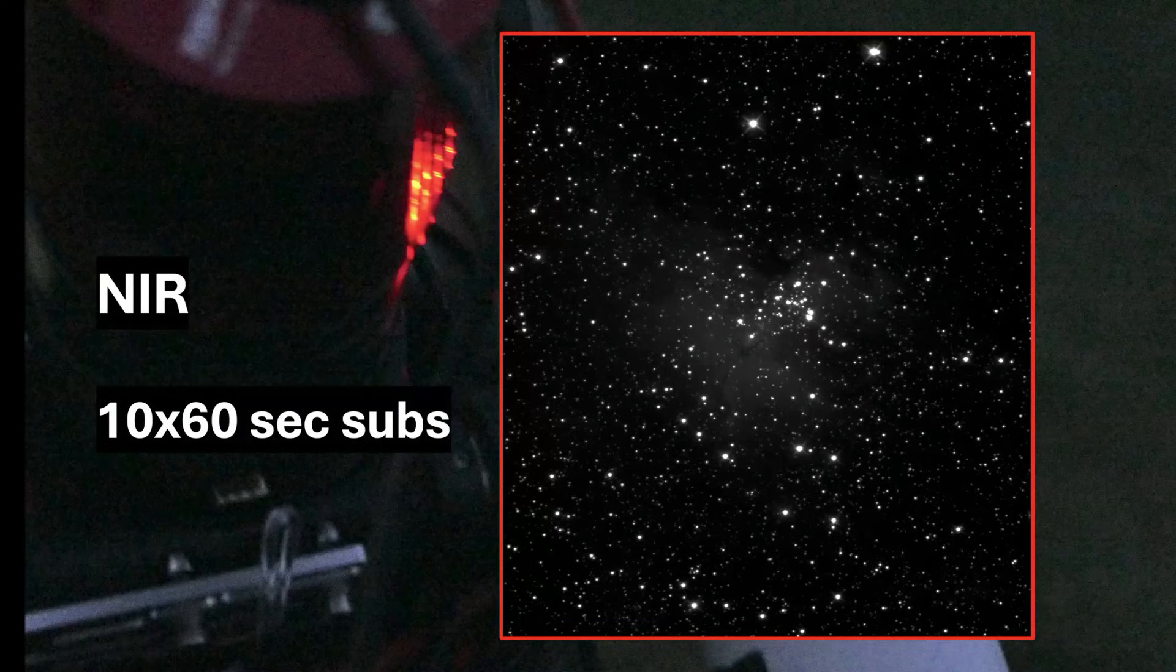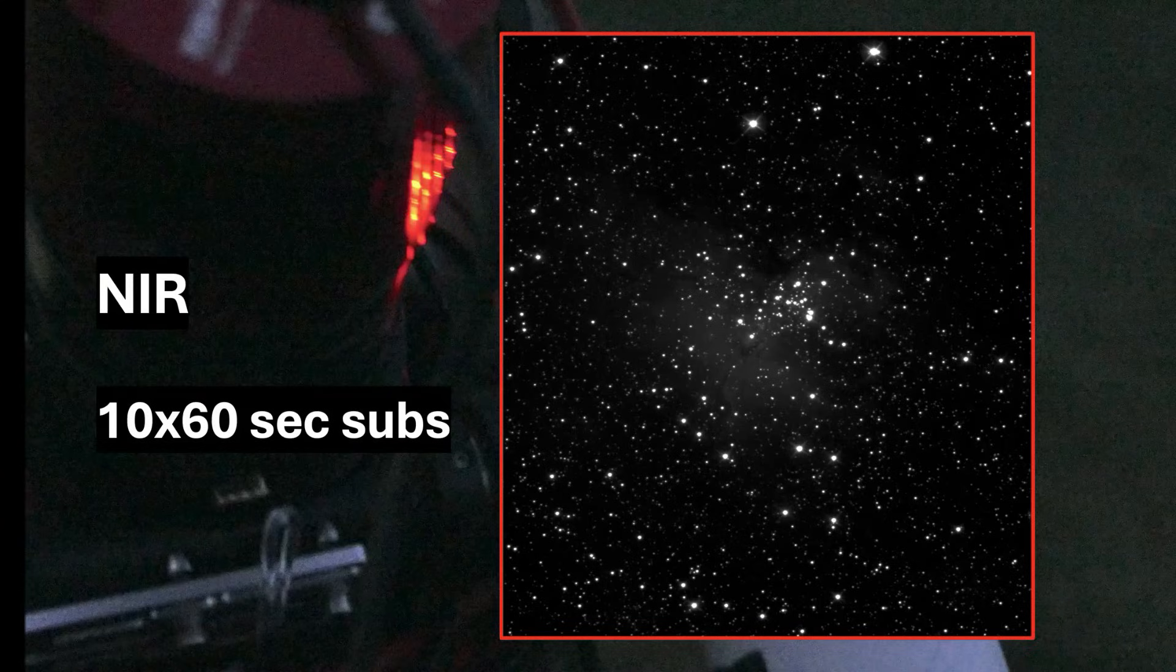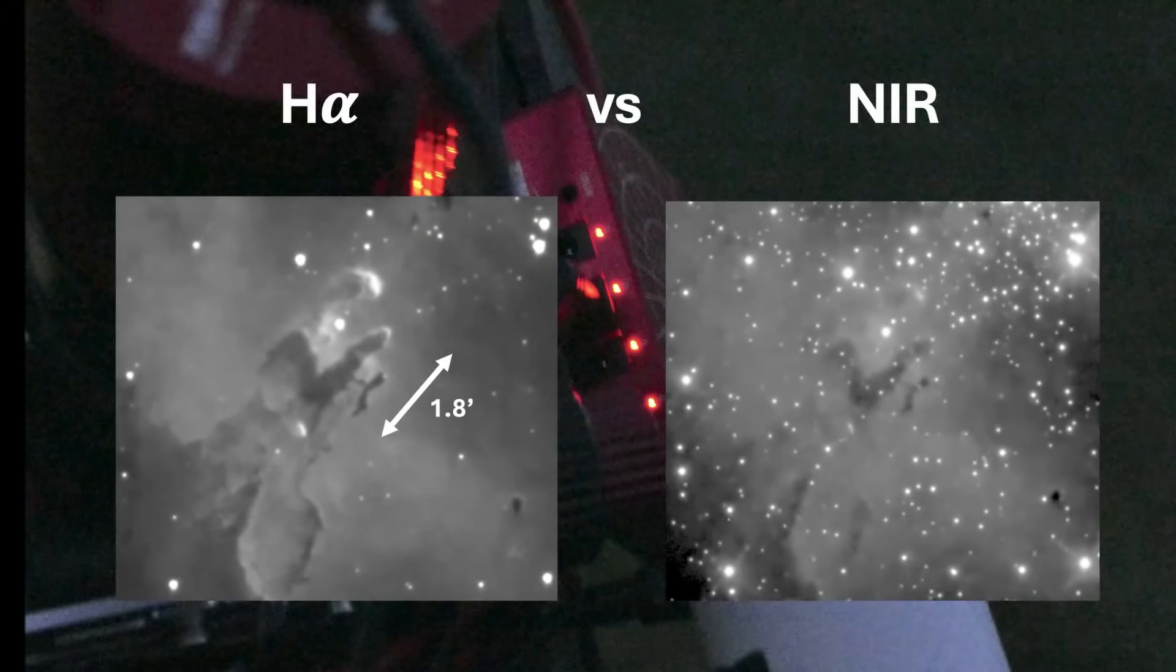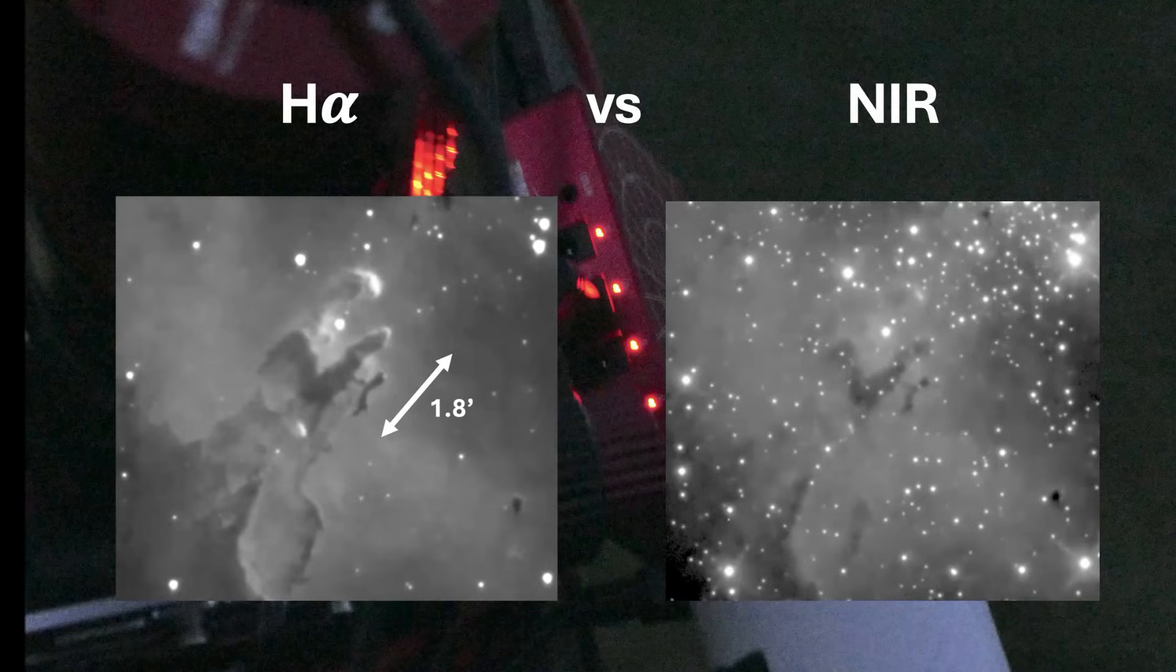Hydrogen alpha. The near-infrared stack, very little nebulosity, but an abundance of high contrast stars. Just to give you an idea of the resolution, I'm providing a scale here for the pillars of creation, taken in hydrogen alpha and near-infrared.